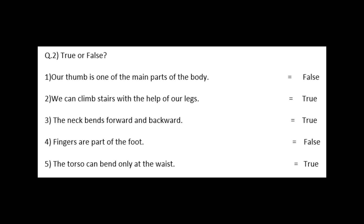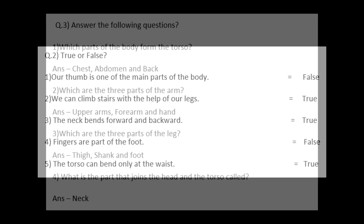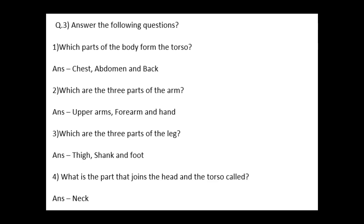Then next, question number 3, answer the following questions. First, which part of the body forms the torso? So the answer: chest, abdomen and back. Second, which are the three parts of the arm? Answer: upper arm, forearm and hand.